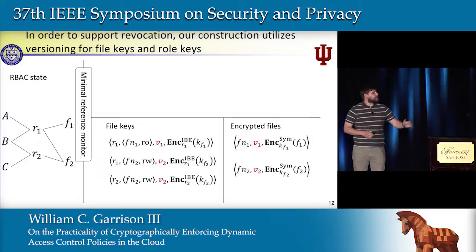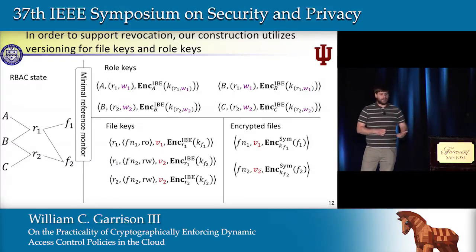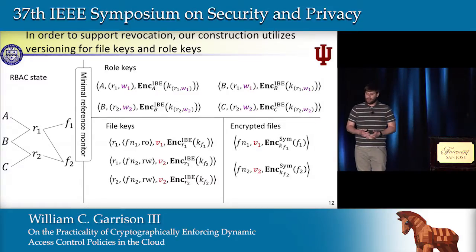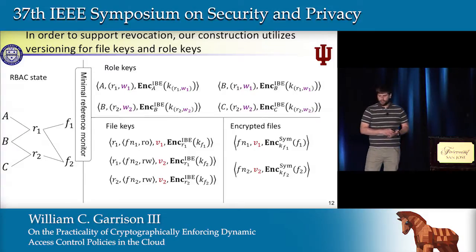We're going to use a similar system for role identities—we'll version each role identity. And then any time we need to remove a user from a role, we'll generate a new version of the role identity and corresponding role key, and distribute those only to the remaining members.